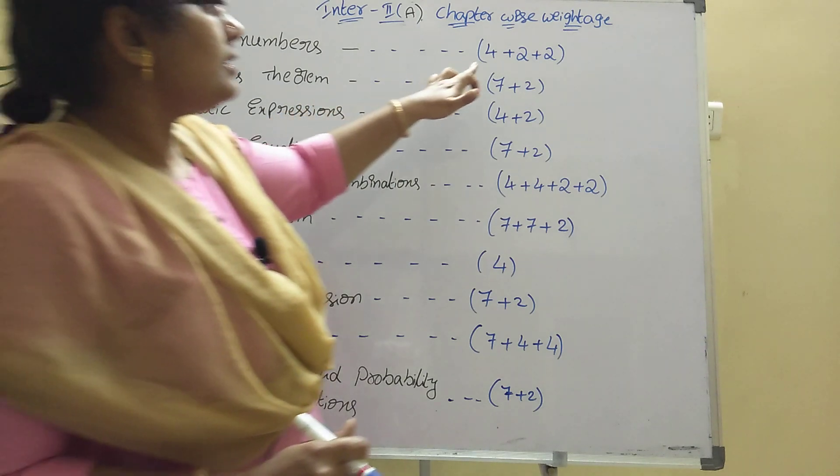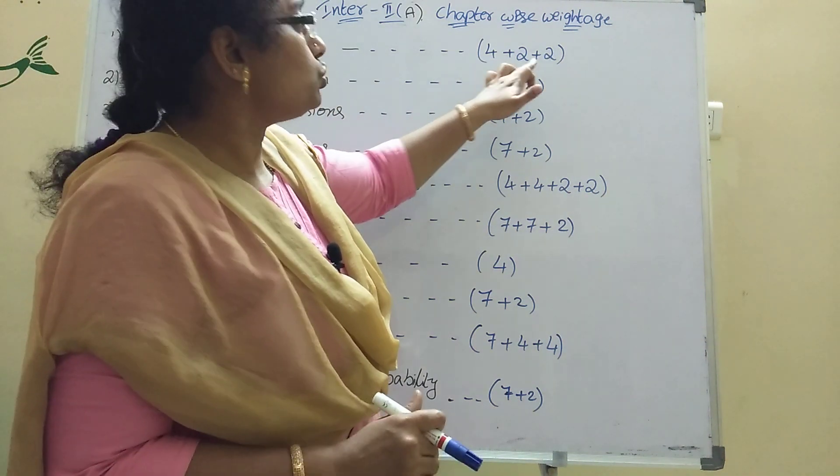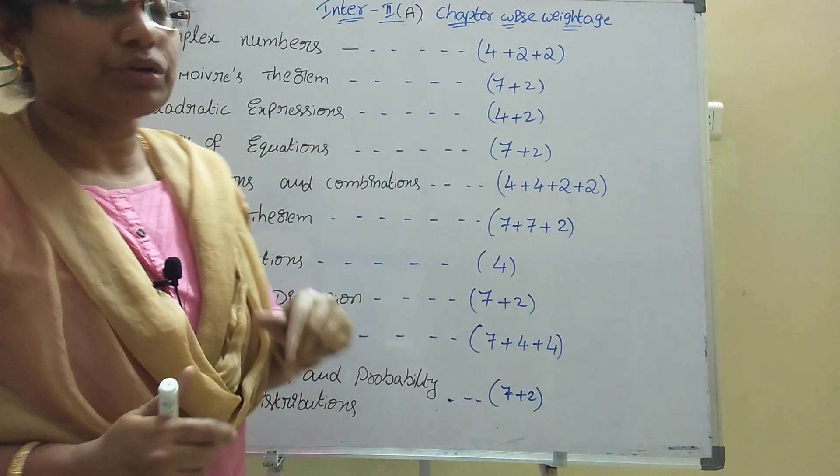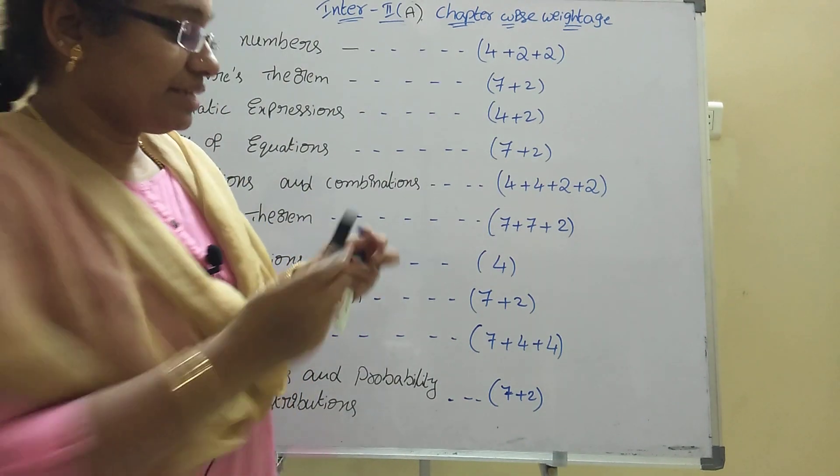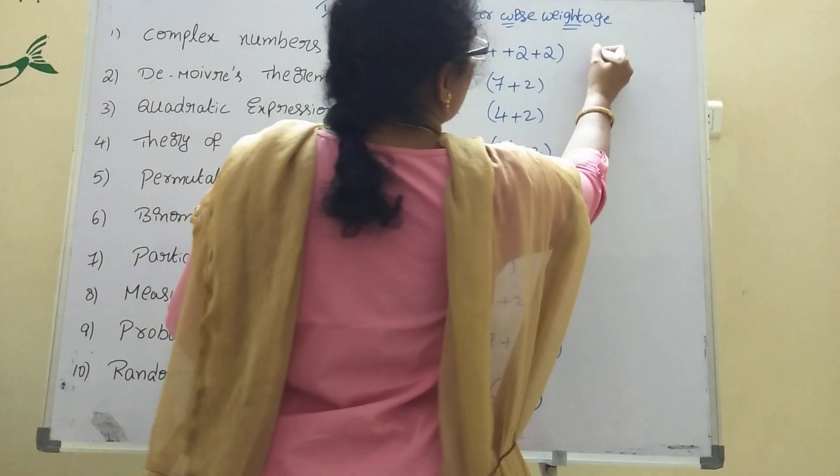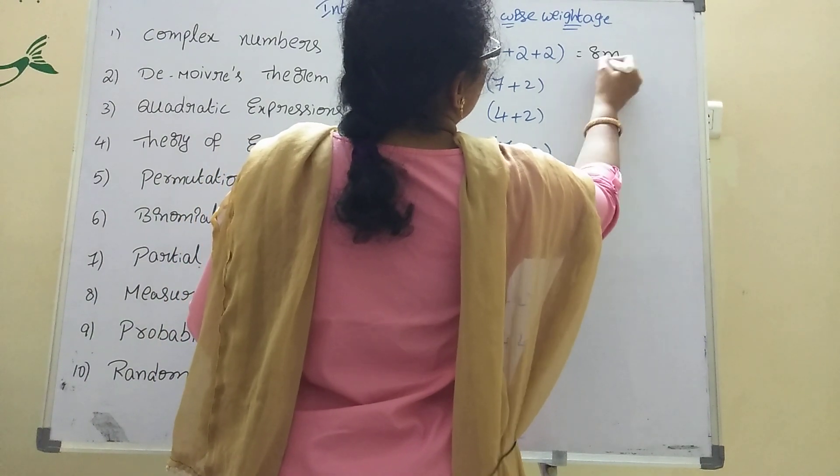Complex numbers: one 4-mark and two 2-mark questions, which means total will be 8 marks in complex numbers.